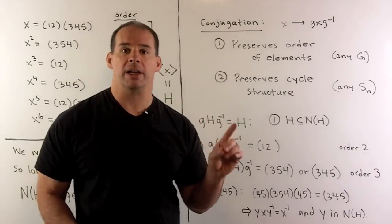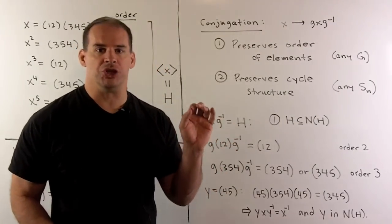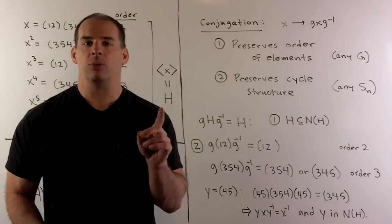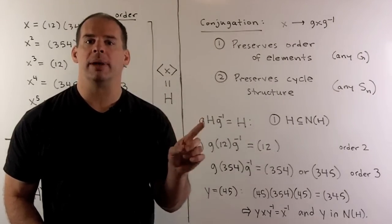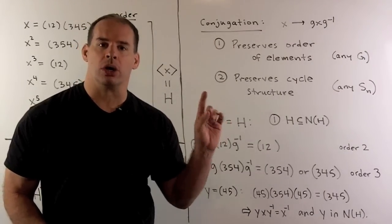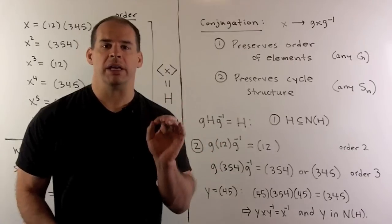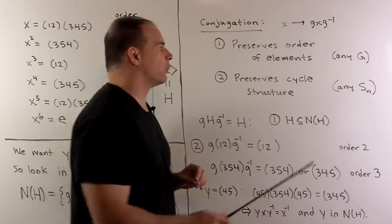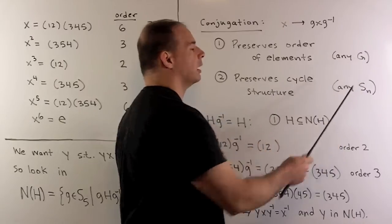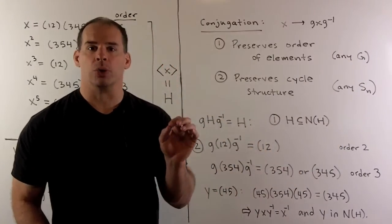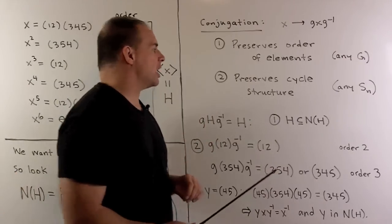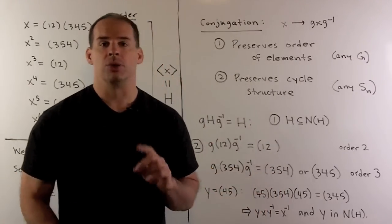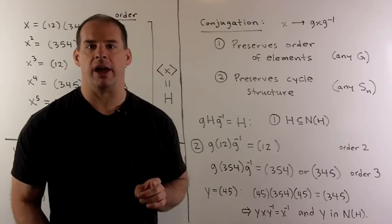If I want to understand the normalizer of H, we should look at conjugation. If we take an element X, conjugate by an element G, so we're going to send X to GXG inverse, then the order of our new element is the same as the order of X. That just means conjugation preserves the order of elements. That rule is true for a general group. Because we're working with symmetric groups, we also have that conjugation preserves cycle structure.